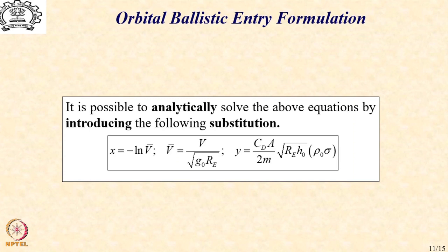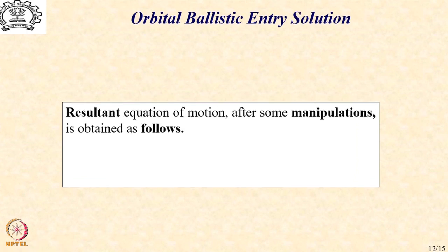Because root of G0 Re is nothing but the circular orbital velocity at a specific altitude that is surface of the earth. Then we also introduce another parameter y in terms of the drag coefficient, the frontal area and the other parameters of the problem. We can do a bit of algebraic manipulations after which the resultant equation of motion is obtained as follows.